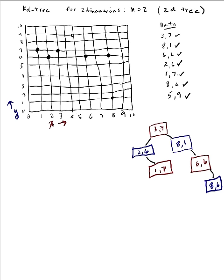My last piece of data to insert is (5,9), which belongs here on the grid. Inserting: 5 is greater than 3 so I go right; 9 is greater than 1 so I go right; 5 is less than 6 so I go to the left. That places (5,9) here.